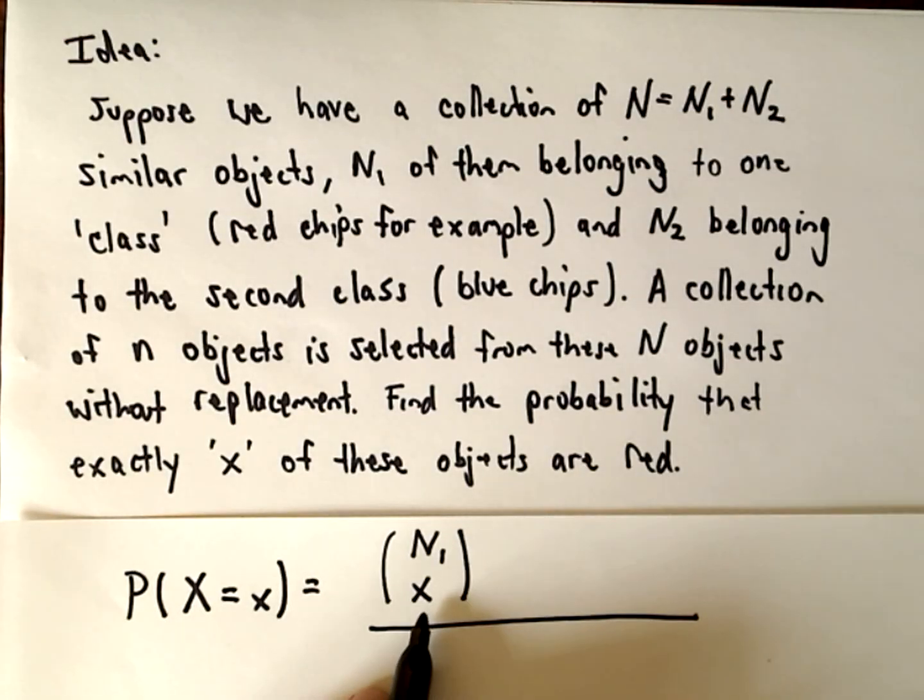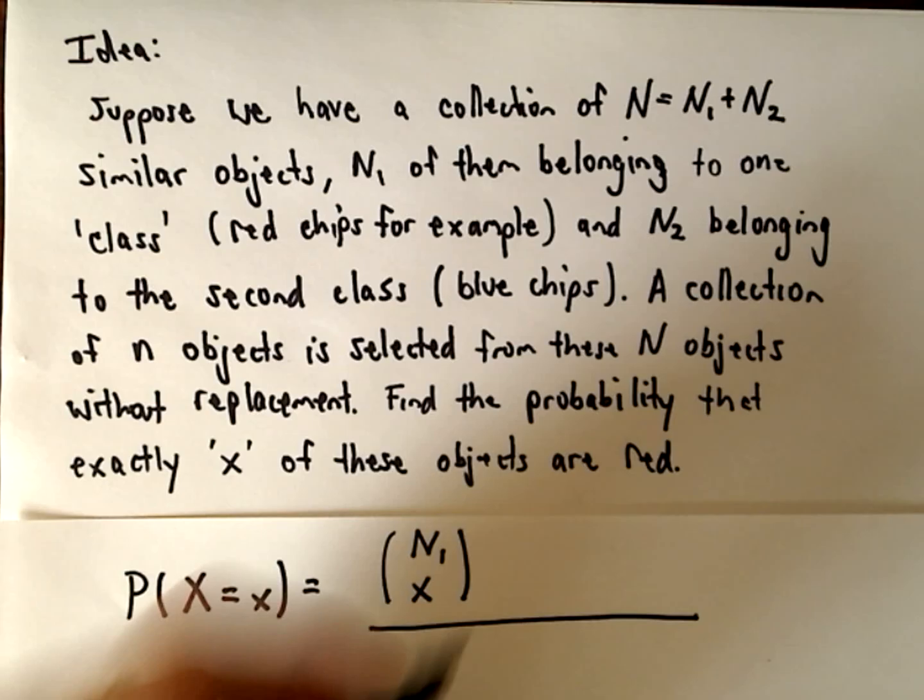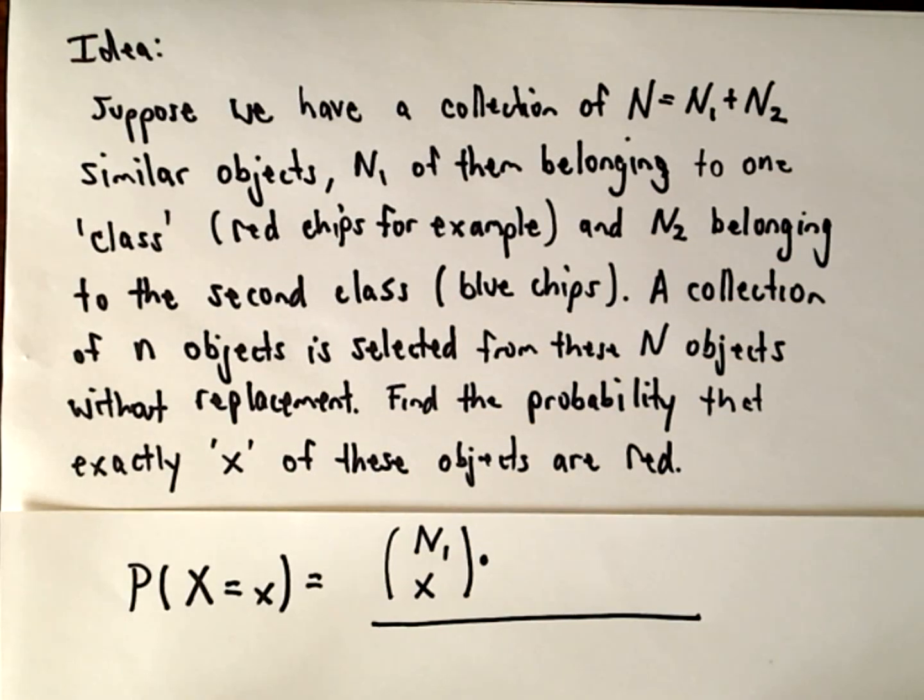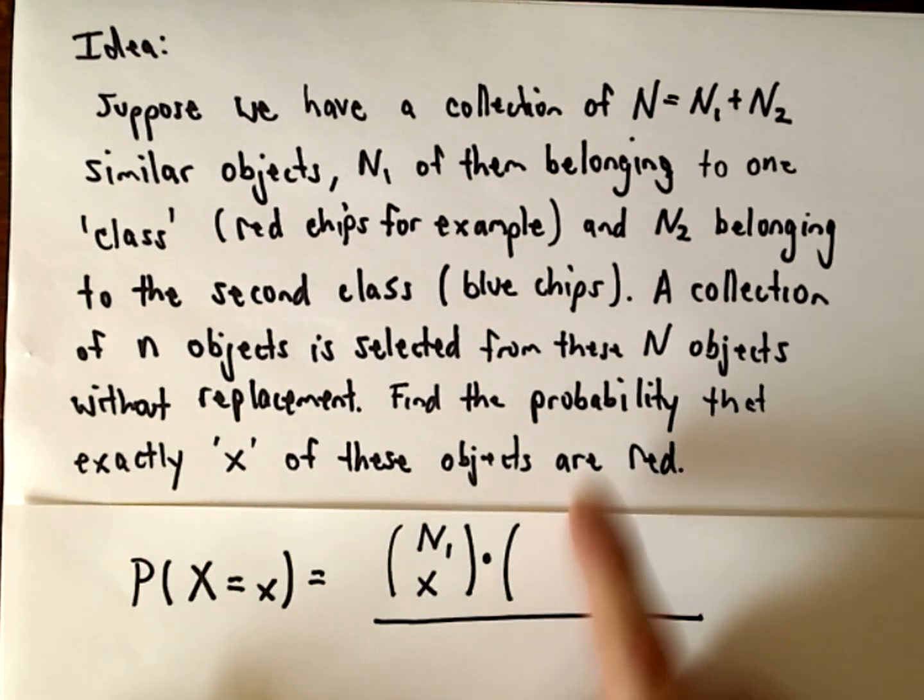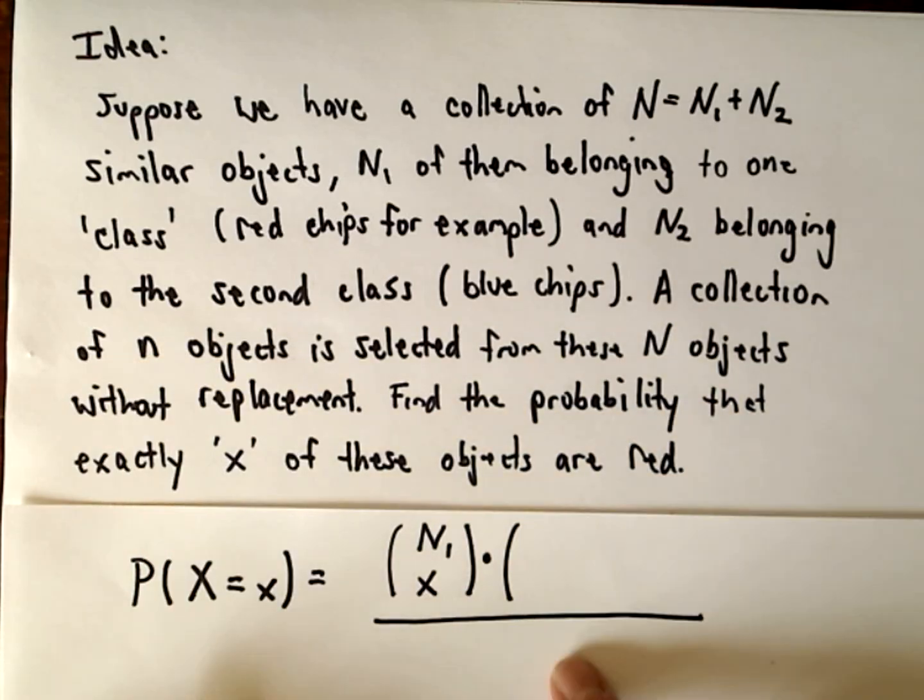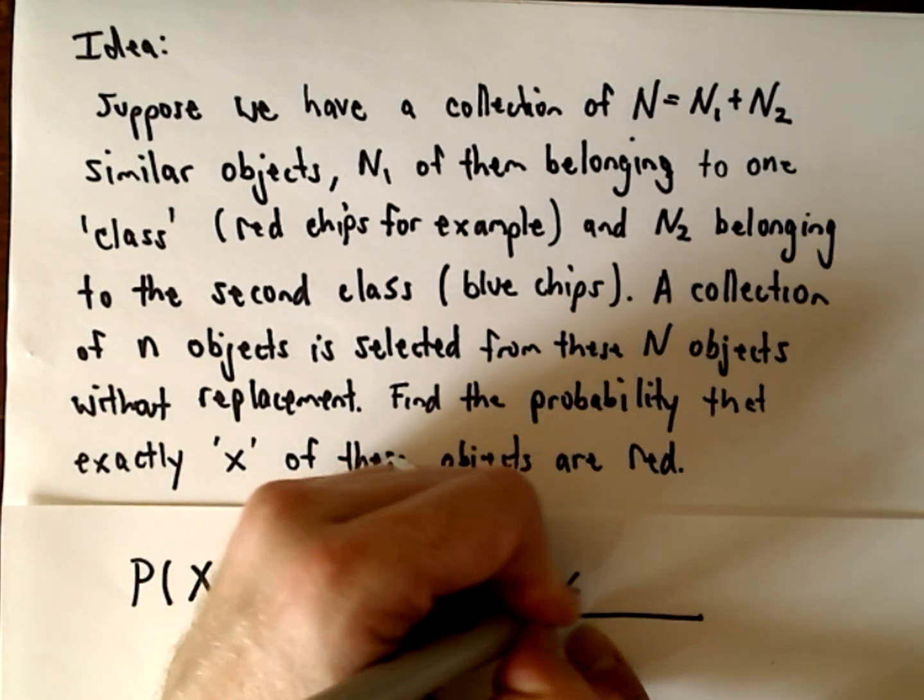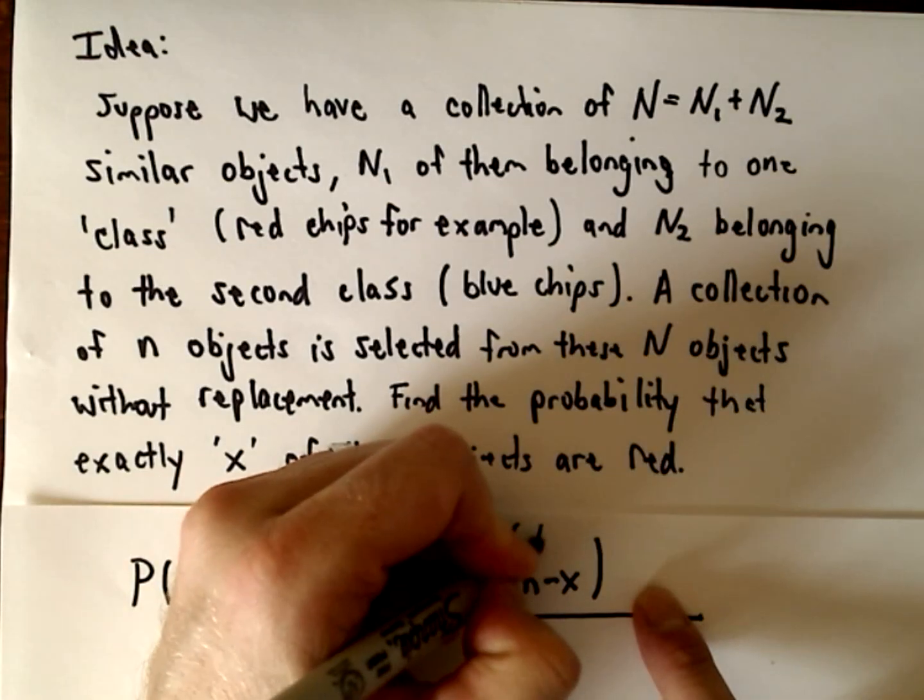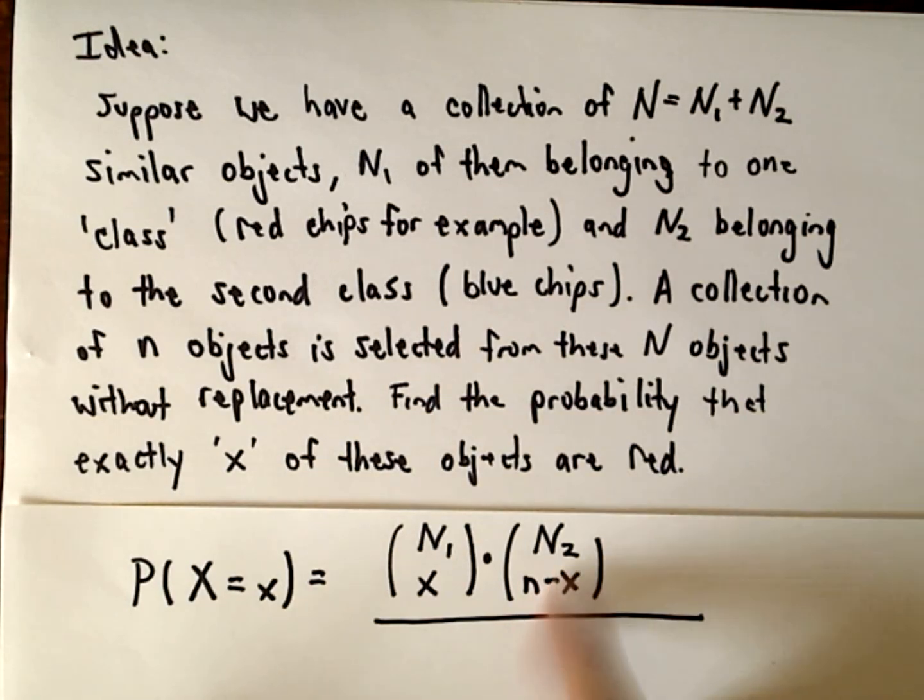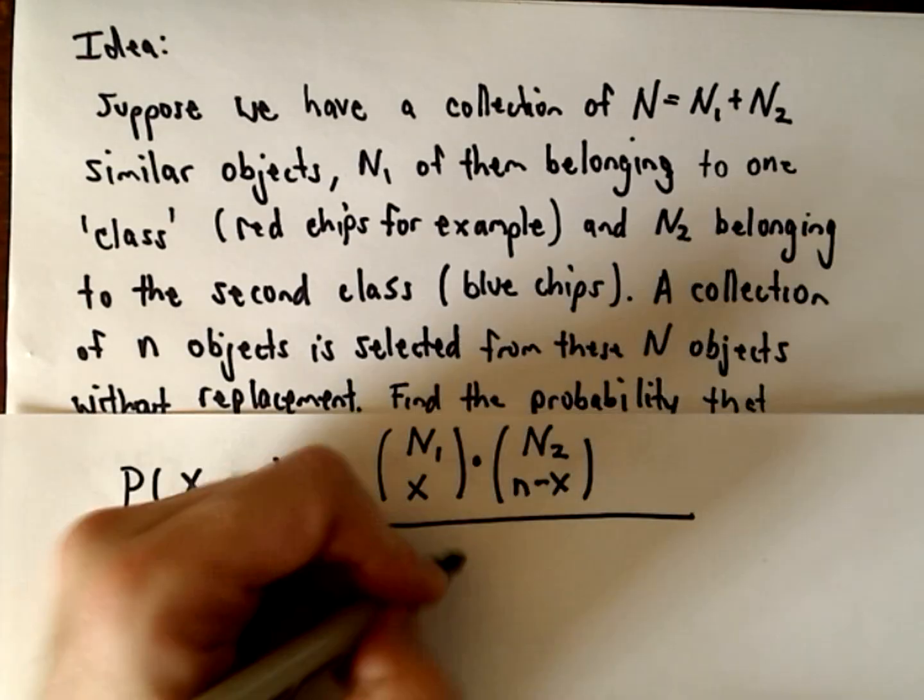Well then what's going to happen? So I've got to choose x of the red chips and remember 'and' corresponds to multiplication in probability. We have to choose x red chips and the remaining chips - since we're selecting little n of them total, the remaining n minus x chips are going to be blue. Well the number of ways we can do that is n sub 2 choose n minus x.